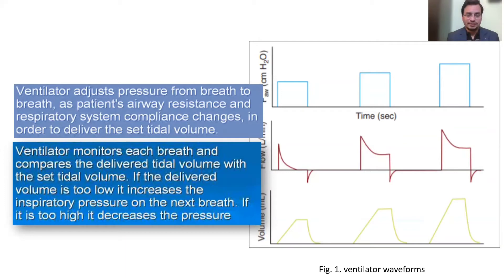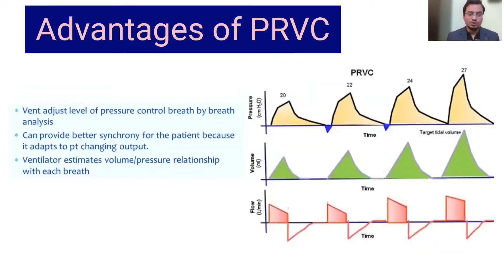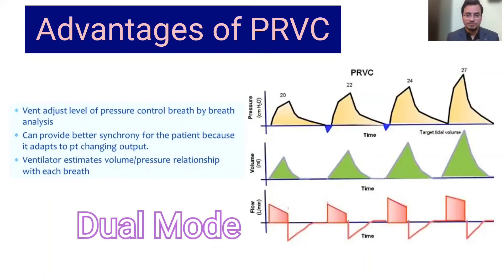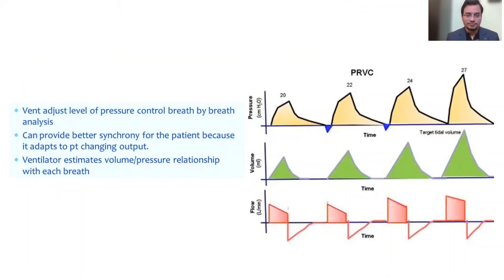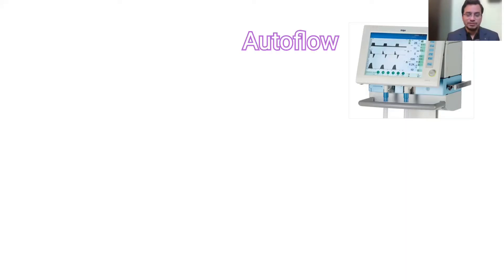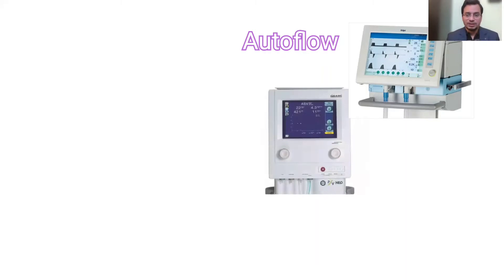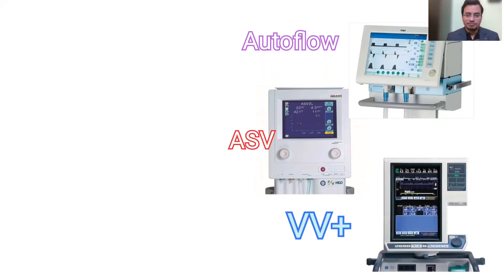The ventilator sends a few test breaths to assess the mechanics of the respiratory system. It wants to deliver the target tidal volume with the least pressure — that is the beauty of this mode. This mode is also called the dual mode or non-conventional mode of mechanical ventilation because it controls both volume and pressure. It provides better patient-ventilator synchrony, leading to earlier weaning. PRVC is known as auto flow in Dräger, adaptive support ventilation in Hamilton Galileo, and volume ventilation plus in Puritan Bennett.